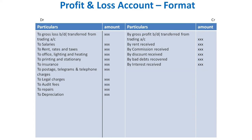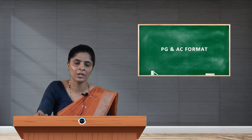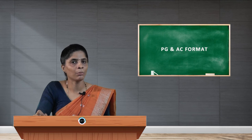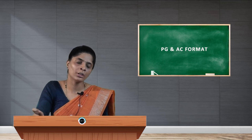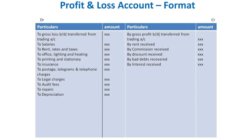Next is bad debts — a very important adjustment. Bad debts arise only in case of credit sales. For example, if goods worth rupees 20,000 are sold to a customer on credit but the customer pays only 15,000 and fails to pay the remaining 5,000 because he became insolvent, that irrecoverable amount is treated as bad debts — it is a loss.